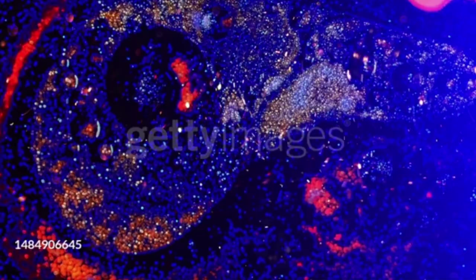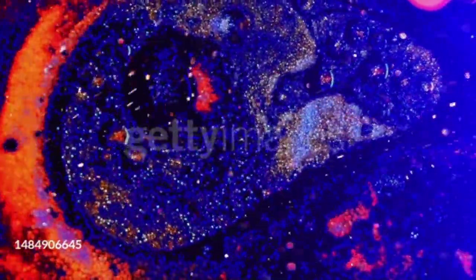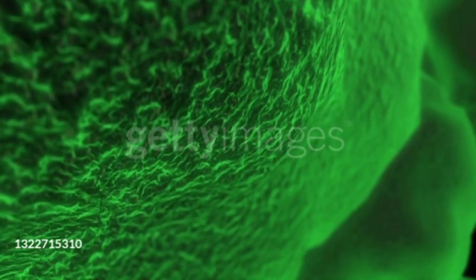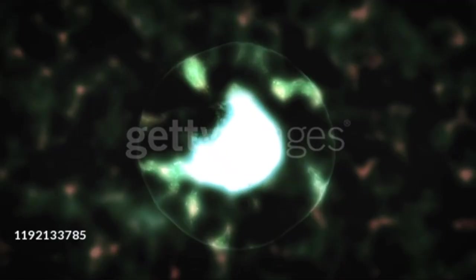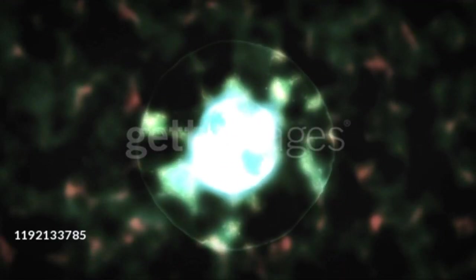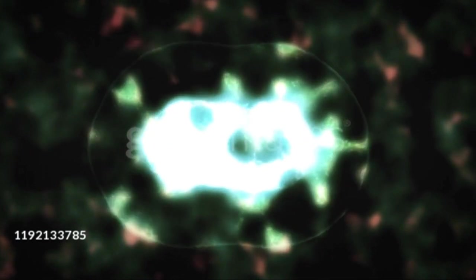2. Surface-Volume Ratio. When a cell grows in size, its volume increases more than its surface. So a stage will be reached when the surface area of the cell becomes insufficient to draw the materials from the surrounding. At such a critical stage, the cell increases its surface-volume ratio by division.